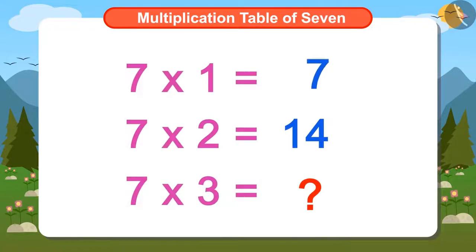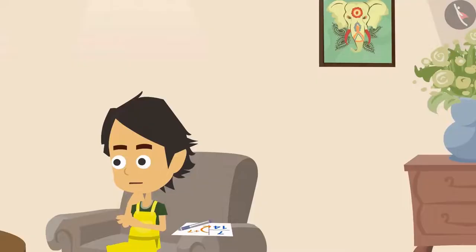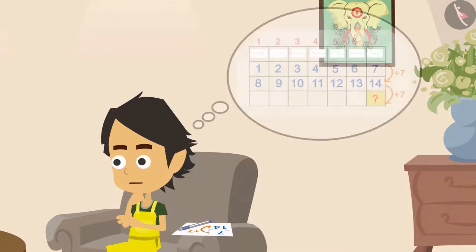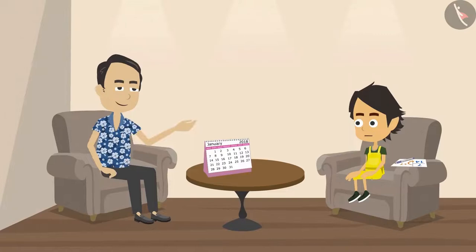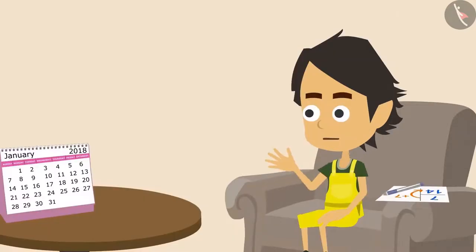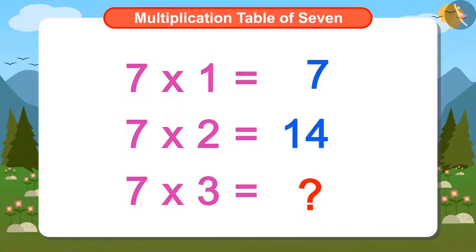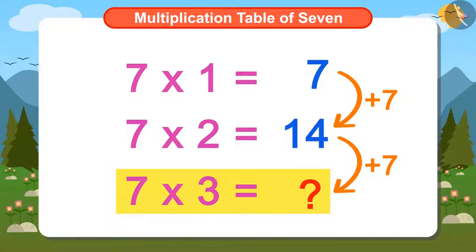The first number is 7. We added 7 to it and got the next number. By further adding 7 to it, we will find the subsequent number. If Ayushman could remember the table of 7, he would have been able to tell next Sunday's date without paper and pen. Ayushman explains that the first Sunday is 7×1 = 7th, the second Sunday is 7×2 = 14th, so the third Sunday's date will be 7×3. But he does not know the multiplication table of 7, so without paper and pen, he cannot answer.